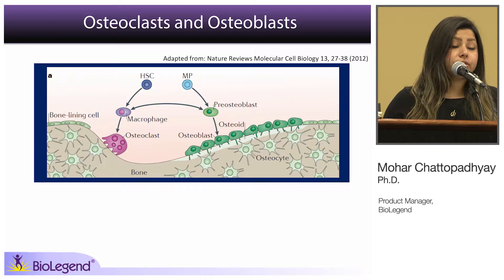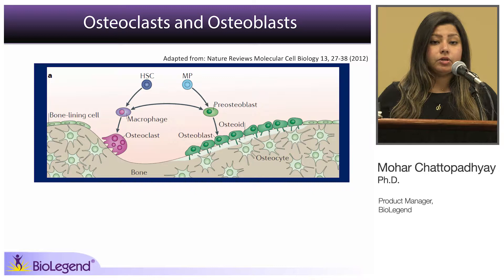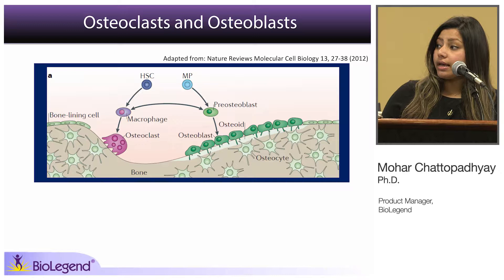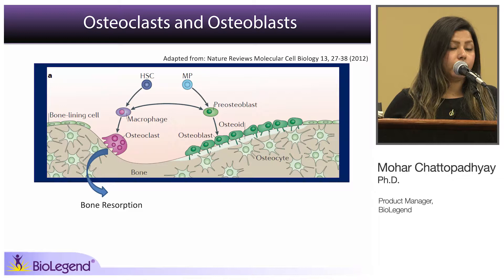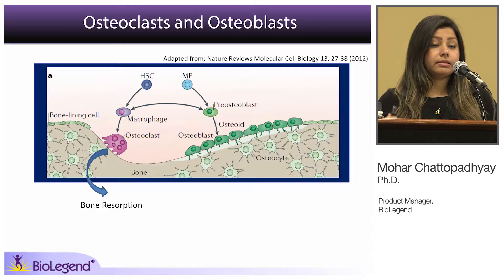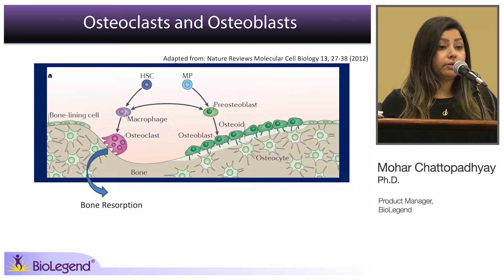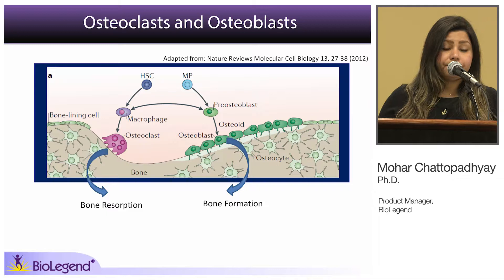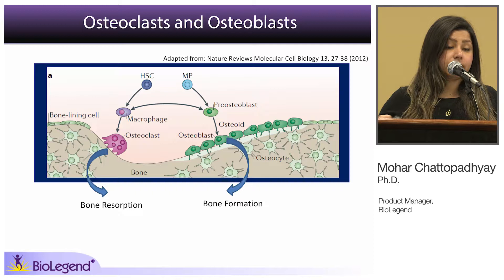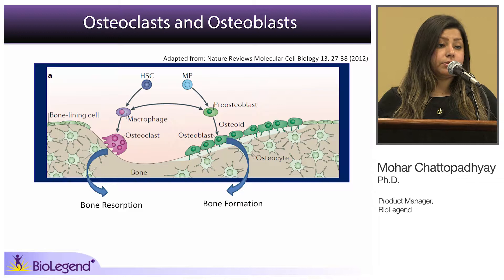A quick background about osteoclasts and osteoblasts — these are the two categories of cells present in bone. Osteoclasts are responsible for bone resorption, or breaking down and dissolving the bone. Bone resorption is a natural process important for bone repair, remodeling, and maintenance. The osteoblast family includes osteoblasts, which are responsible for bone formation; osteocytes, which support the bone; and bone lining cells that line the outer surface and provide surface protection.